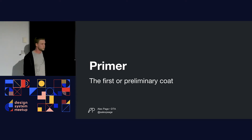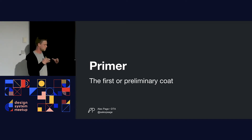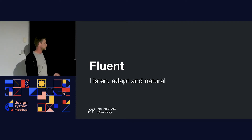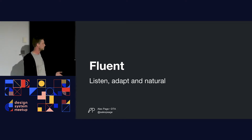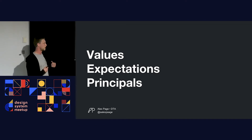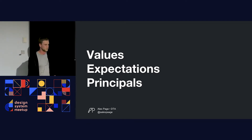GitHub's Primer design system — you can see it as the first or preliminary thing. It gives the idea that as a designer or developer, this is just the base: you can change it, modify it, do your own things with it, but this is what you start with. And Microsoft's Fluid Design System — listen, adapt, keep it natural, keep it easy to understand. You can see how the name conveys the values of the product, expectations of users, and principles of the design system.